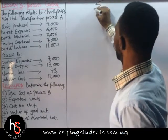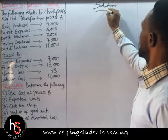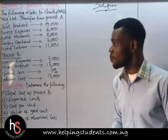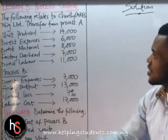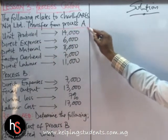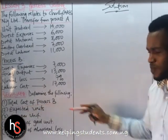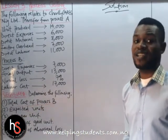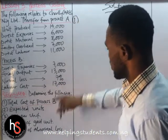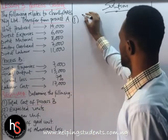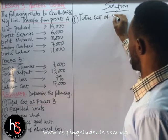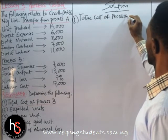Solutions. The first thing we are asked to do is to get our total cost of process B. Now when we read through the question again, it says transfer from process A. Here we have transfer from process A, and at this section they are telling us the total cost of process B. So we title the solution: total cost of process B.